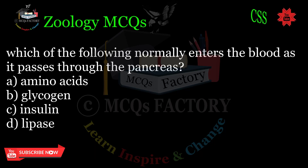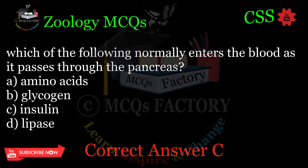Which of the following normally enters the blood as it passes through the pancreas? A. Amino acids. B. Glycogen. C. Insulin. D. Lipase. Correct answer: C.